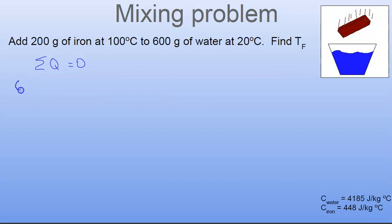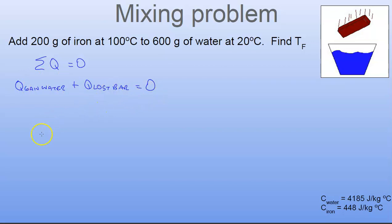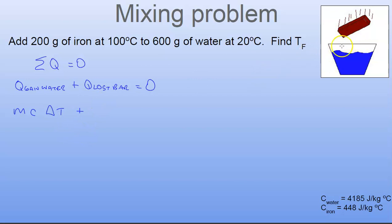The heat gained by the water plus the heat lost by the iron bar equals zero. The heat gained will be a positive number and the heat lost will be a negative number. Together they equal zero. The water is at 20 degrees and going up in temperature, so that's a sensible heat change — MC∆T. Similarly, the bar of iron is a solid metal and stays solid as it cools, so that's another sensible heat change MC∆T. The water's delta T is positive because temperature rises; the iron's delta T is negative because temperature is falling.